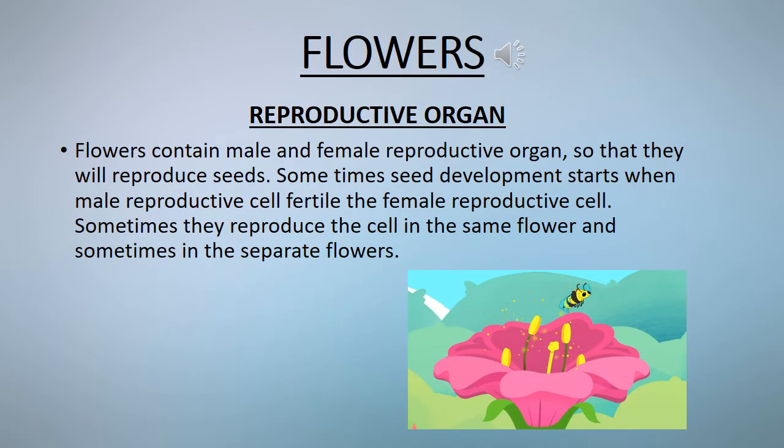Now we are starting unit 2.5 on flowers, page number 16 — reproductive organs. Springtime is the season for warmer weather, sunshine, spring showers, and growing plants. Plants produce dust-like pollen and spores that can cause uncomfortable allergies for humans; however, most plants need pollen or spores to make new plants.